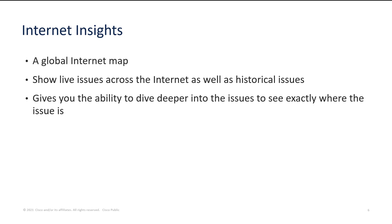We also have Internet Insights, which is essentially a map of the world and the internet that shows real live issues occurring across the internet. Issues that are currently going on across the world can be drilled down into so you can see how they may affect your environment. You can also look at historical issues, which is quite useful — going back to see past events and also diving deeper into an issue to see exactly where it is and whether proactively you need to make a change in your environment, such as routing traffic a different way if you know a specific issue is going to impact your organisation.